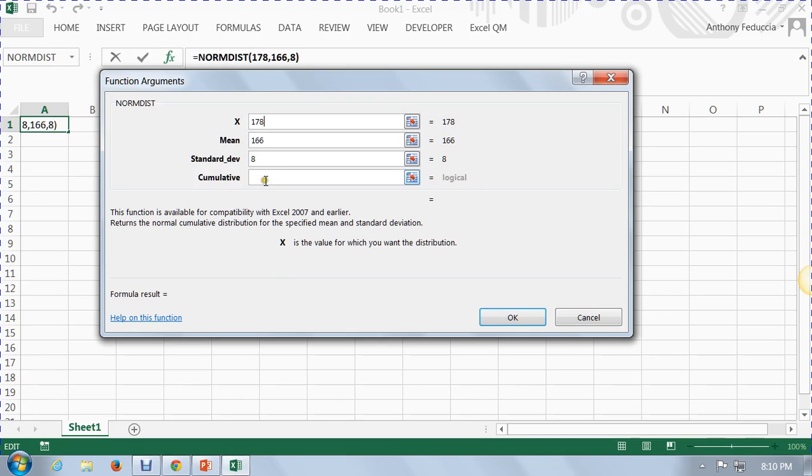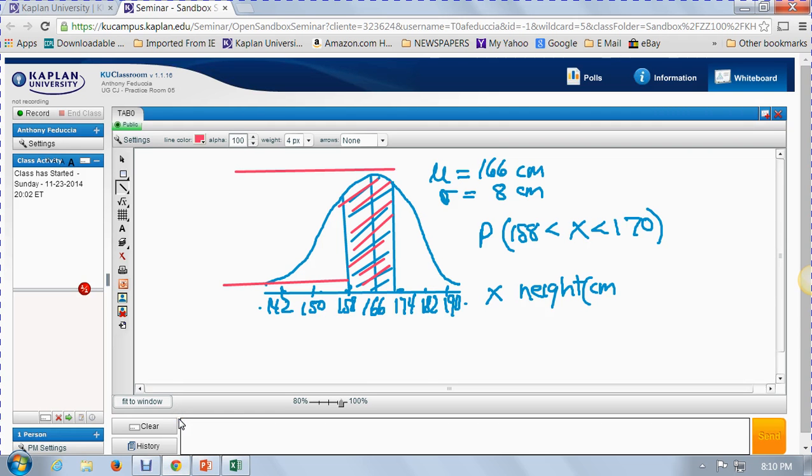So let me put in 178. And then it says cumulative. What it asks you is do you want Excel to accumulate all the data up to and including 178? So you're going to say yes, true. If you said false, it wouldn't. True. Oh, 158, not 178. I made a mistake. 158. Okay. 158. So from 158 to the left, you get 0.1586 of the data. 0.1586 of the data. So this right here is 0.1586.